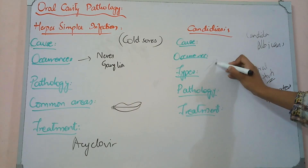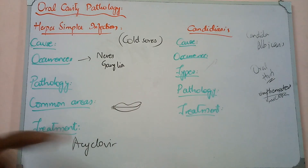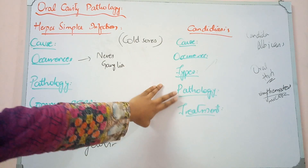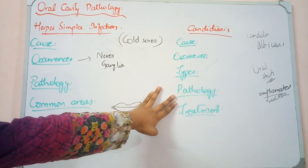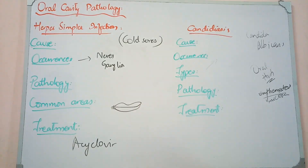Candidiasis can be divided into three types. The first and most common is the pseudomembranous type, which presents with white plaques. The second is the erythematous type, which has no plaques but the oral cavity mucosa appears red and erythematous. The third is the hyperplastic type, which is uncommon. In pathology, the fungal infection forms plaques, and we use periodic acid-Schiff (PAS) stain to identify it.